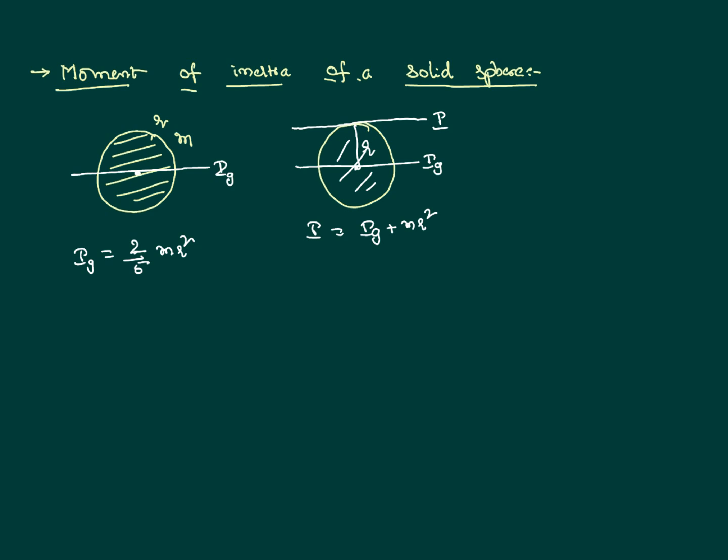According to the parallel axis theorem, the moment of inertia of any body equals the sum of the moment of inertia about an axis passing through the center of gravity and the product of the mass with the square of the distance between the two parallel axes.